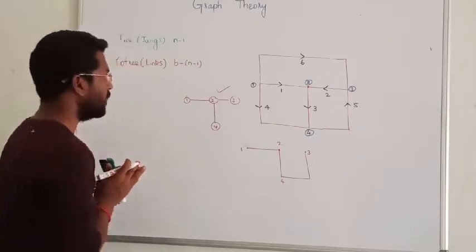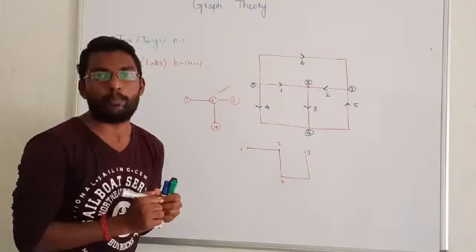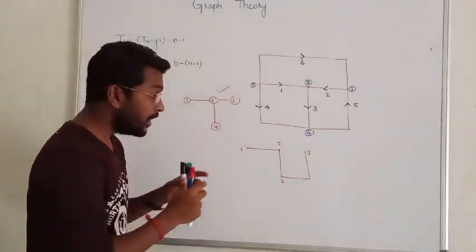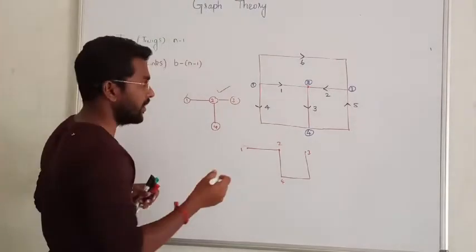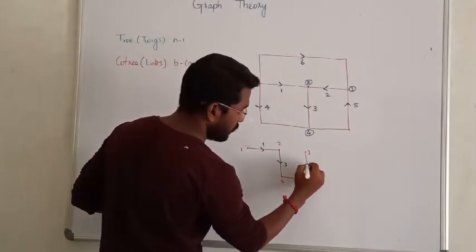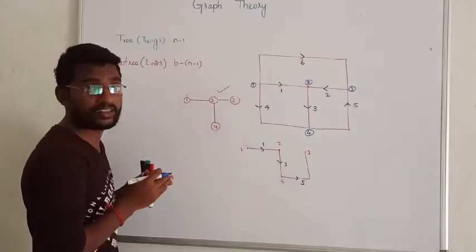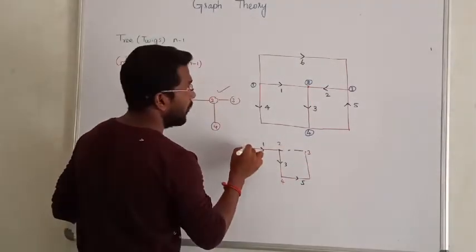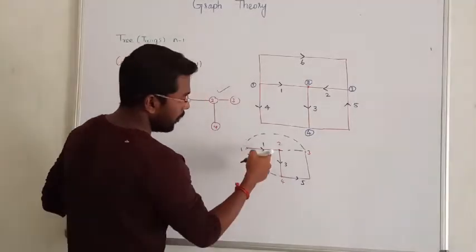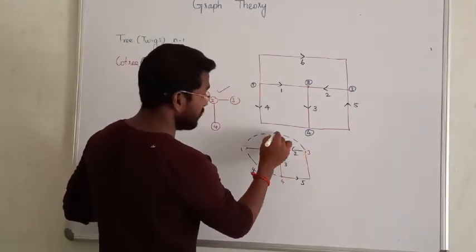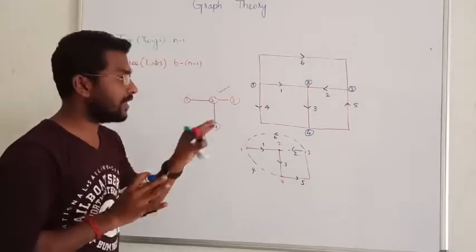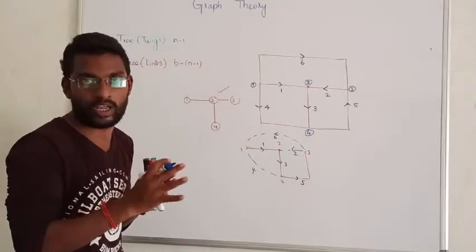The co-tree is a sub-part of the graph. It is a subgraph. One entire network has three forms, and that branch is called the co-tree. That is called a subgraph.